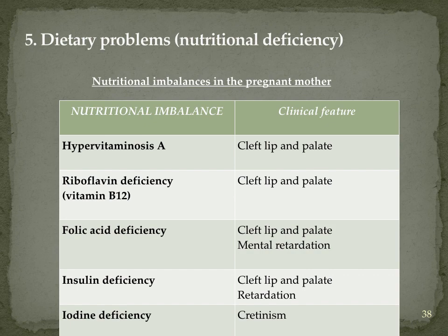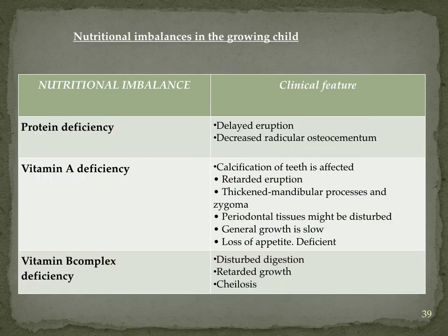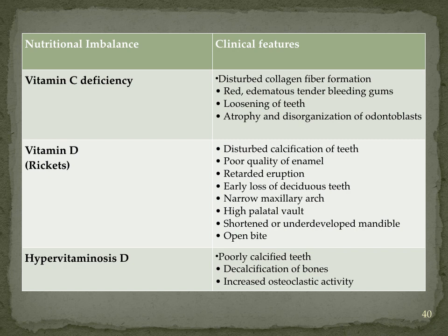Tuberculosis causes generalized stunted growth and delayed eruption of teeth. Mumps causes rapid enlargement of salivary glands, and if the mother is infected during pregnancy it has a teratogenic effect causing dental hypoplasia and retarded eruption. Rubella leads to retarded eruption, dental hypoplasia and congenital malformations including cleft lip and palate. Dietary problems — protein deficiency, vitamin A, B complex, C (scurvy features) and vitamin D (rickets features, poorly calcified teeth, decalcification of bones, increased osteoclastic activity) — all affect dentition.